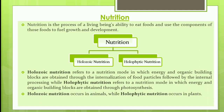Next is nutrition. Nutrition is a living being's ability to eat food and use its components to fuel growth and development. Nutrition is divided into two types: holozoic nutrition, where energy and organic building blocks are obtained through food particles followed by internal processing (occurs in animals); and holophytic nutrition, where energy and organic building blocks are obtained through photosynthesis (occurs in plants).